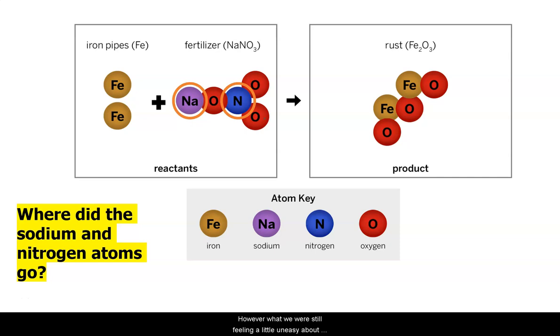However, what we were still feeling a little uneasy about was that there are some atoms that are not in the rust but are in one of the reactants, our fertilizer. In the last few lessons, we have been trying to collect evidence to understand whether it was possible that these atoms just could have disappeared.